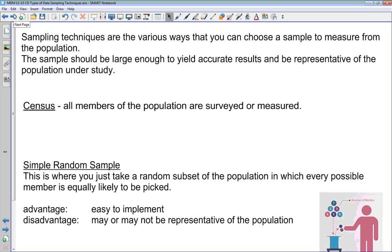So first off, what do we mean by sampling techniques? Sampling techniques are the various ways that you can choose a sample to measure from your population. Remember that the population is all of the things that you are investigating, and from this population you're choosing a sample which is what you are actually going to measure. The sample should be large enough to yield accurate results and be representative of the population under study.